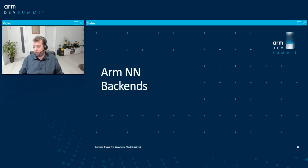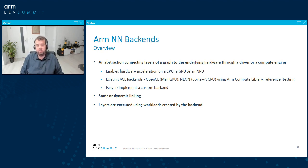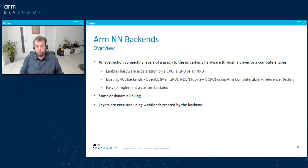Now let's talk about backends. An ArmNN backend is an abstraction layer — basically an interface which connects your model or your graph definition to the underlying hardware. It can be either directly a driver or some compute engine, but you can connect it to any software or library available.